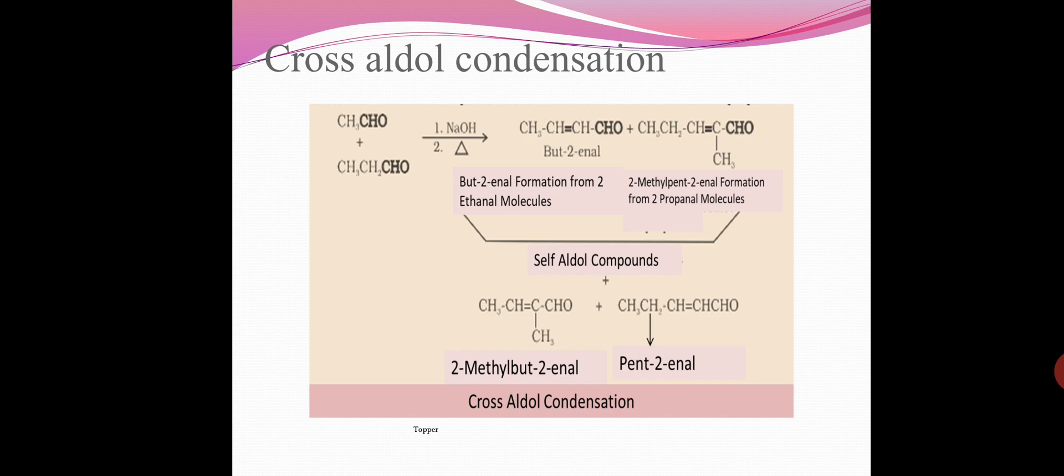Then cross aldol condensation. Cross aldol condensation refers to aldol condensation that takes place between two different aldehydes or ketones. For example, acetaldehyde and propionaldehyde in presence of NaOH gives but-2-enal. This is called cross aldol condensation.